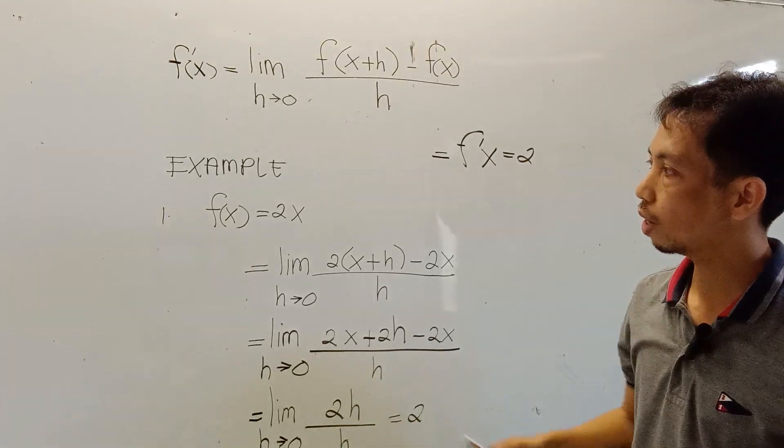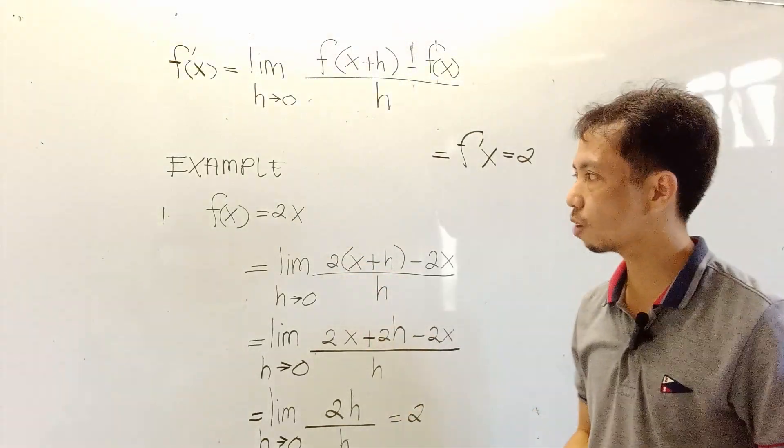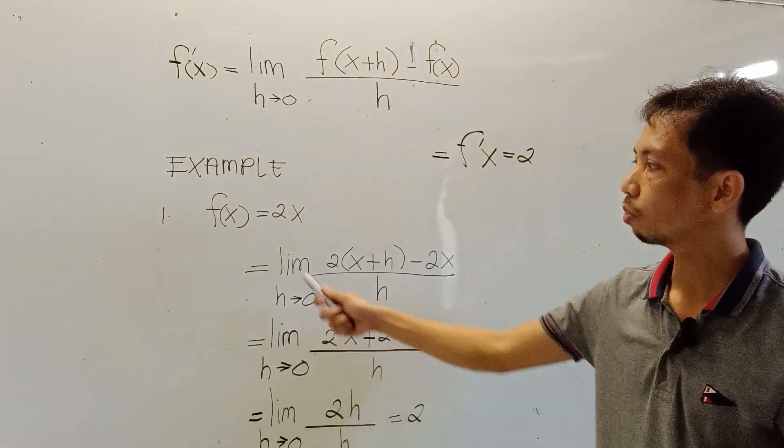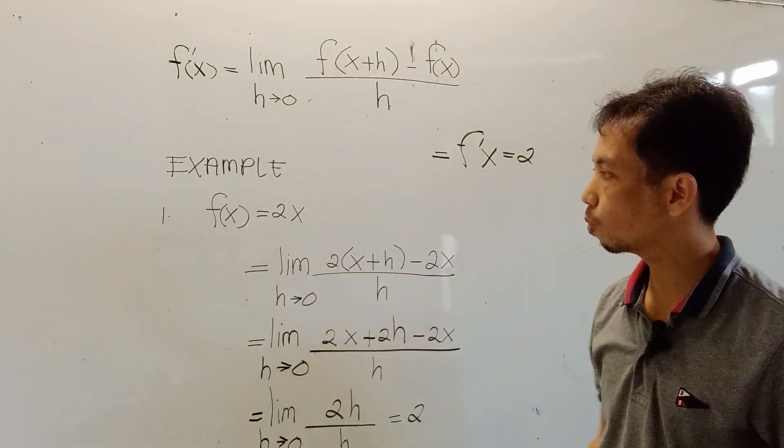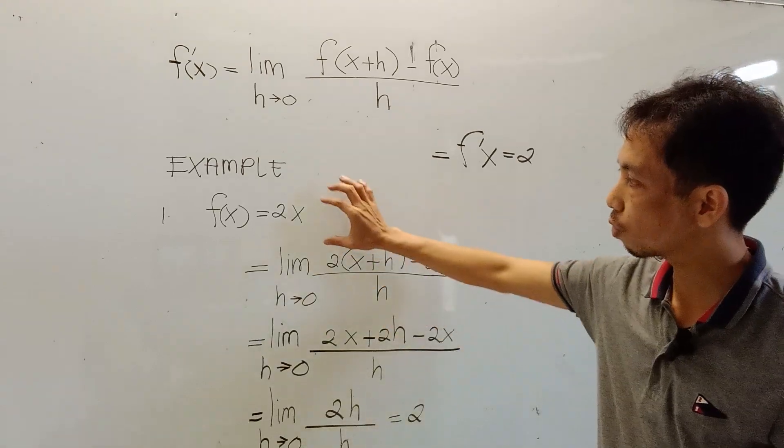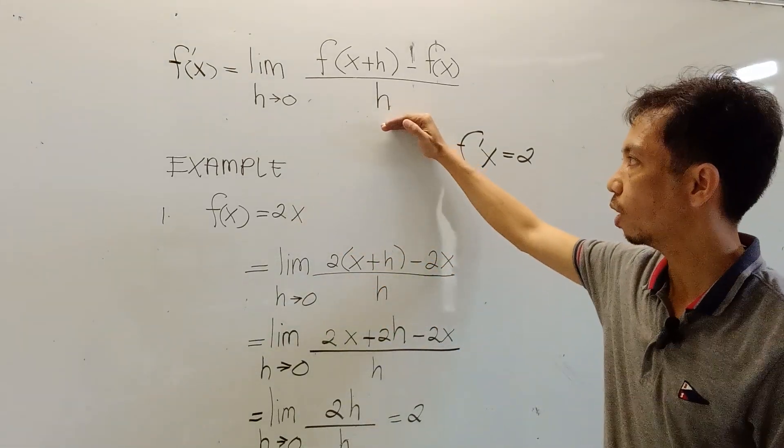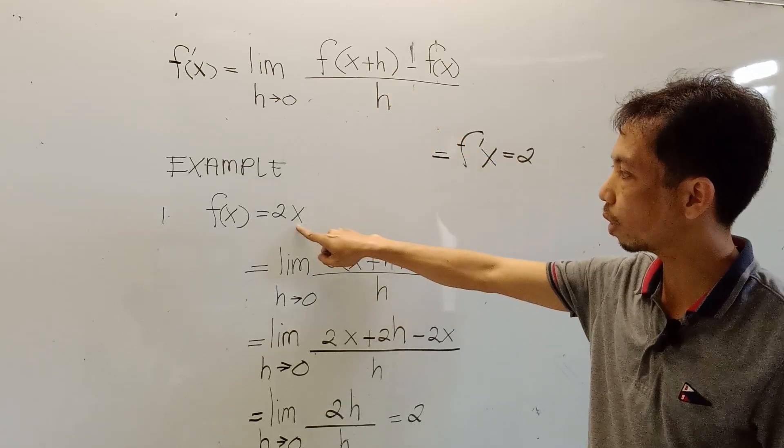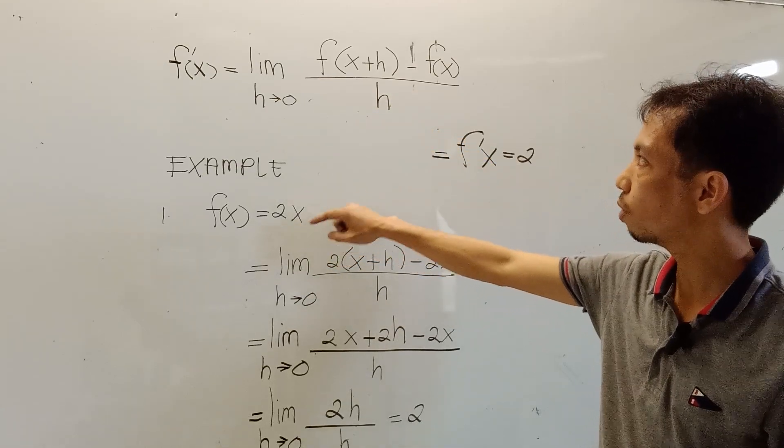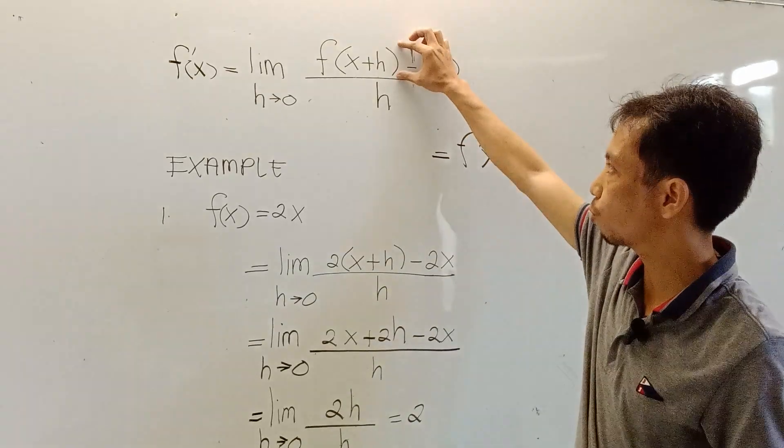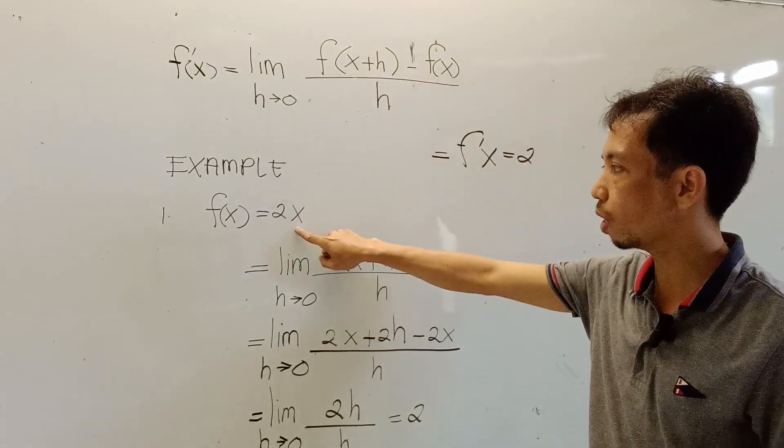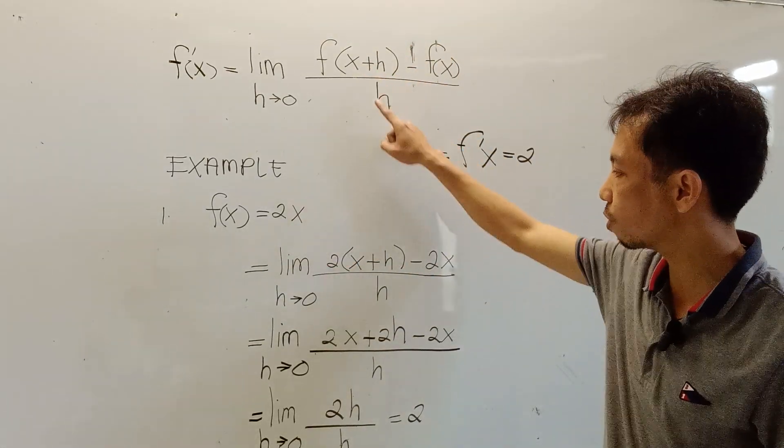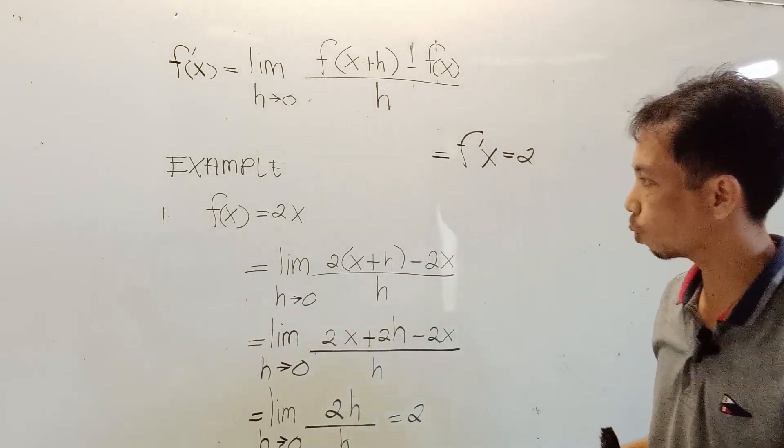So we have an example here. Let's get right to the example. Example number one, f(x) equals 2x. So we are going to solve this one using this definition of limits. The definition of limits says that simply we replace the x variable with x plus h. So let us try to do that one.